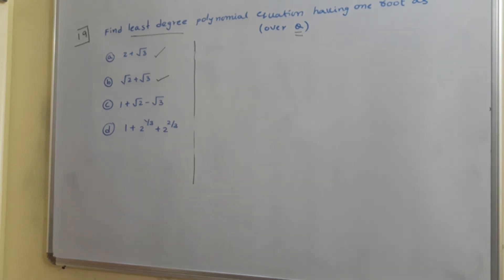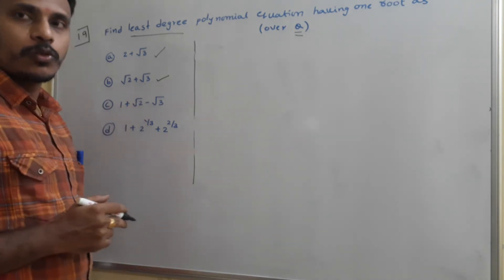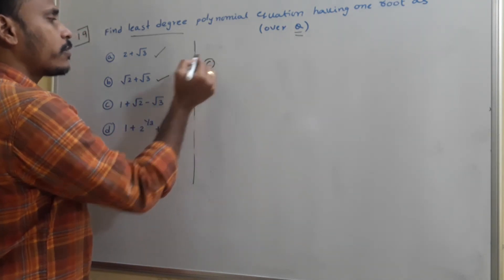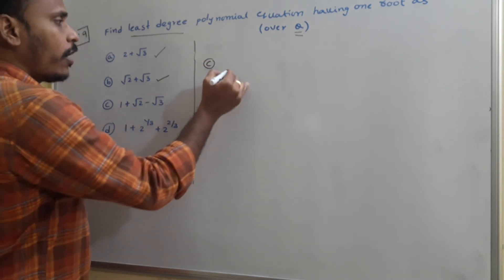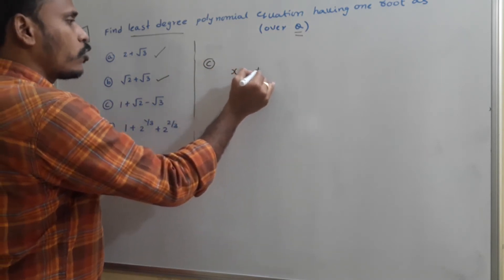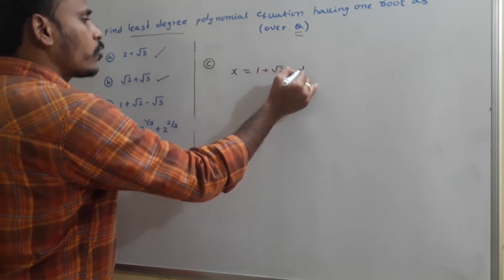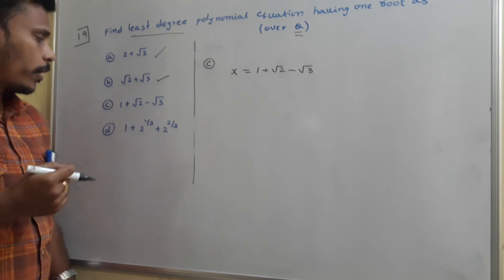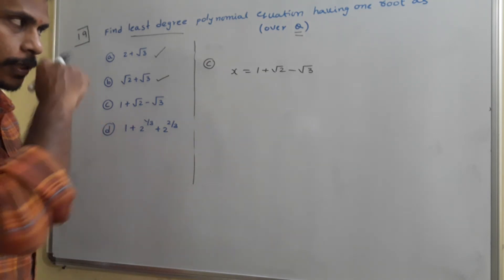Next, problem C. Again, one root is 1 plus root 2 plus root 3. We need to find the polynomial equation over rationals. This time, directly going with Method 2. Take x equals 1 plus root 2 minus root 3.